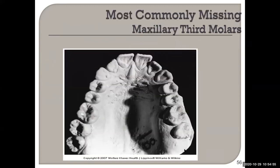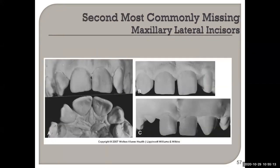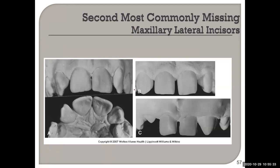Reviewing quickly: maxillary third molars are most commonly missing. The second most commonly missing are the maxillary lateral incisors. Years ago, orthodontically they would move the canines into the lateral space and reshape the canine to make it appear more like a lateral. Now, if we know the lateral is missing, they maintain the space and when the person is old enough they get implants.